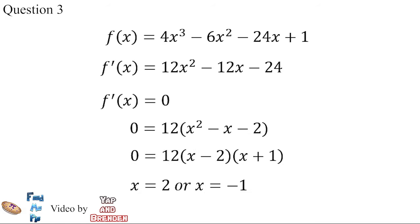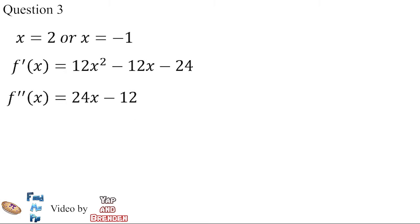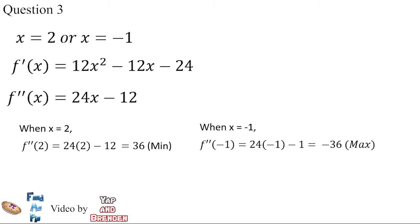By solving the equation we can get x equals 2 or x equals negative 1. Differentiating Y with respect to X a second time to determine if each turning point is a maximum or minimum: substituting x equals 2 into the equation gives a positive number, which means it is a minimum point; substituting x equals negative 1 gives a negative number, which means it is a maximum point.